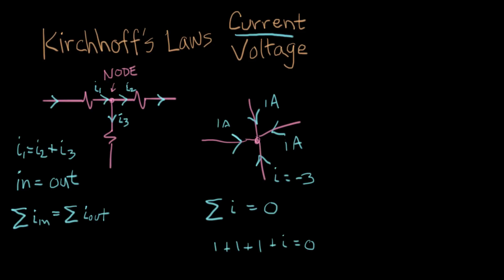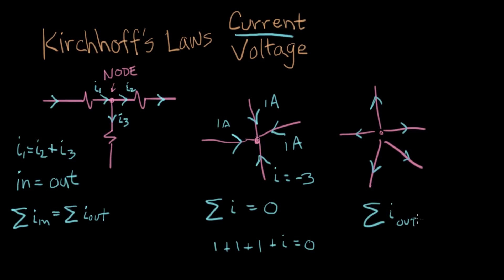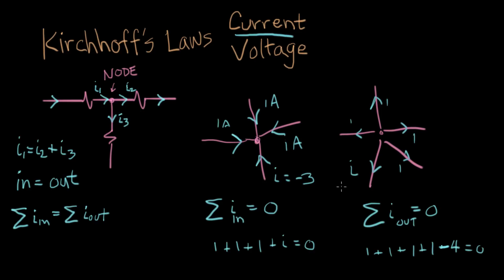Another equally valid way to do it — this is just three ways to say exactly the same thing. I have a bunch of wires going to a junction, and this time I define all the currents going out. The sum of the currents going out has to equal zero as well. If I make all of these one amp and ask what is the unknown current i going out, it's one plus one plus one plus one — those four going out — and the last one has to satisfy the sum equaling zero, so it's minus four amperes.